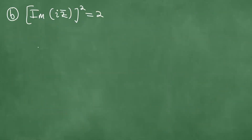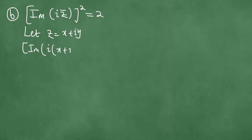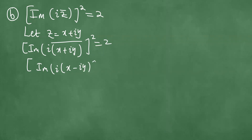Next we describe part (b). We do the same and let z equal x plus iy. This means we take the imaginary part of i times (x plus iy) times its complex conjugate, squared, equals 2. The complex conjugate changes the sign of the imaginary part, so we have the imaginary part of i times (x minus iy), squared equals 2. Distributing gives ix plus y, like this.